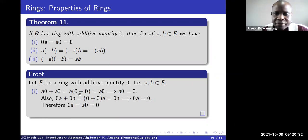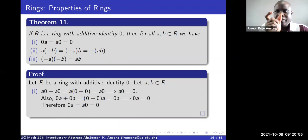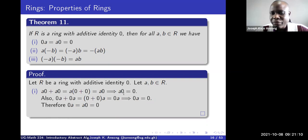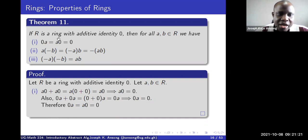Zero plus zero is of course zero, since zero is an additive identity. So we have A times zero. Notice that we take this element, add it to the same element, and get the element back. That means this element is equal to the additive identity — because the identity satisfies x plus identity equals x. So this has to be zero, meaning A times zero equals zero.